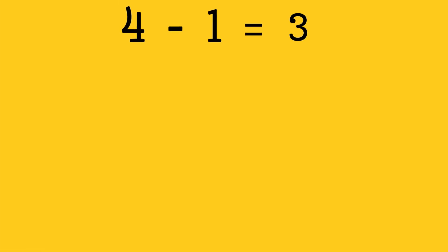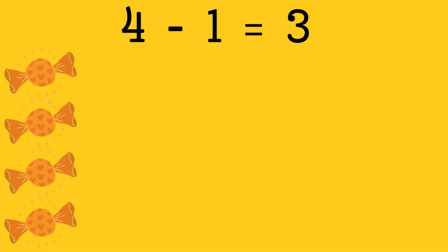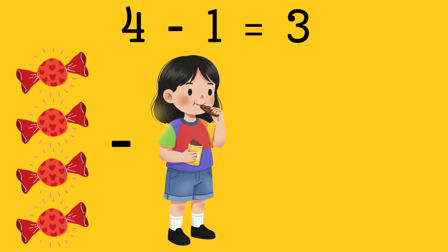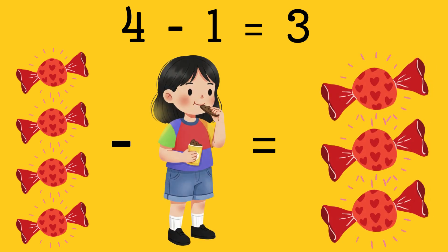4 minus 1 equals 3. Let's say you have 4 chocolates and you shared 1 with your sister. How many chocolates left? Correct, 3 chocolates.